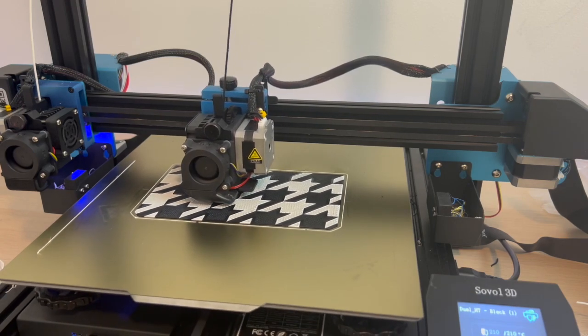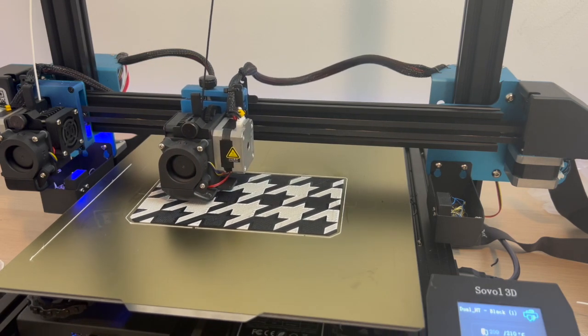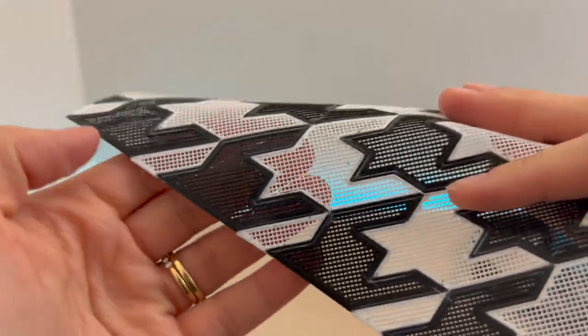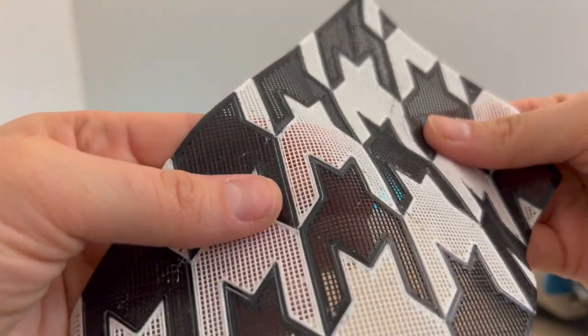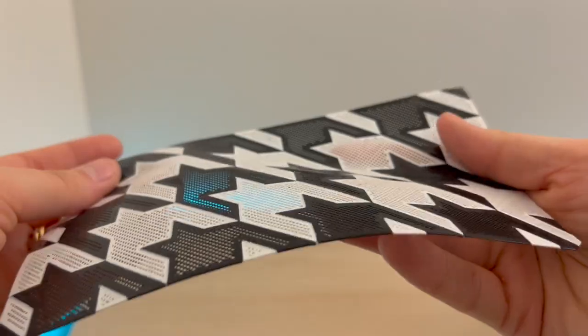After slicing, I was finally ready to print myself some dual extruder houndstooth textile, and it was just so beautiful seeing it as one whole piece, honestly. All TPU, no holes, no rough 3D print seams, and I just, I really like it.